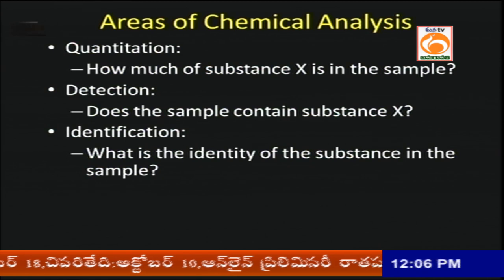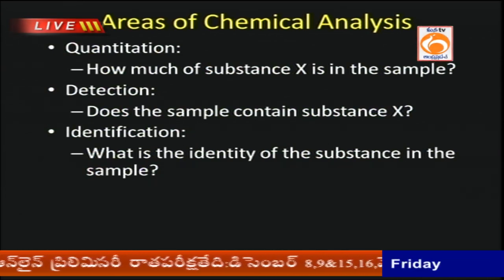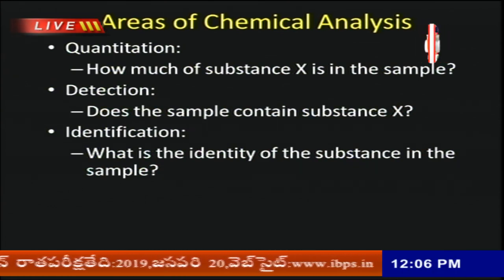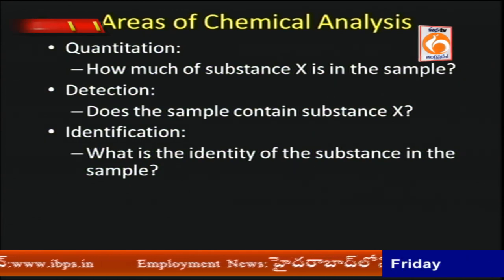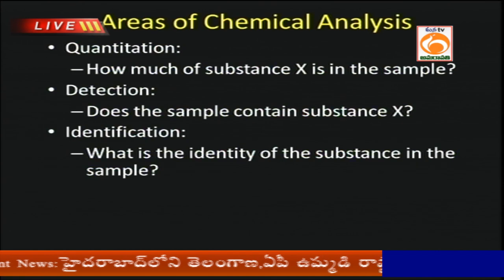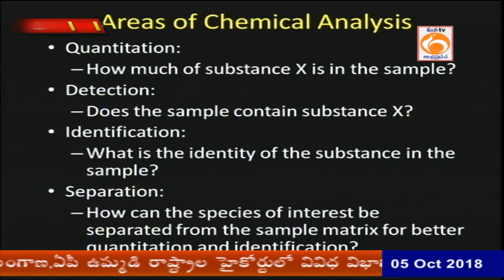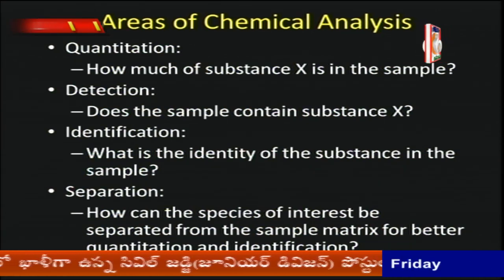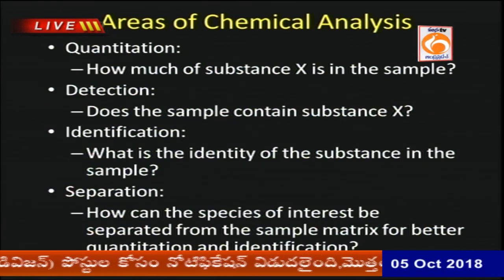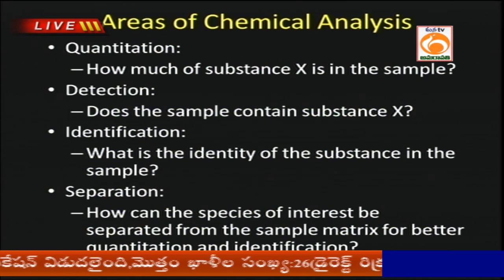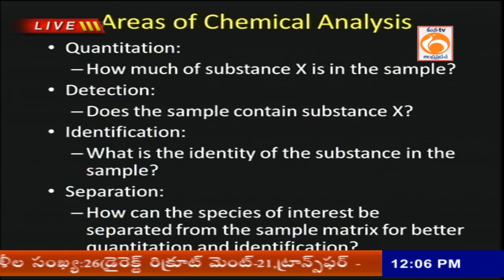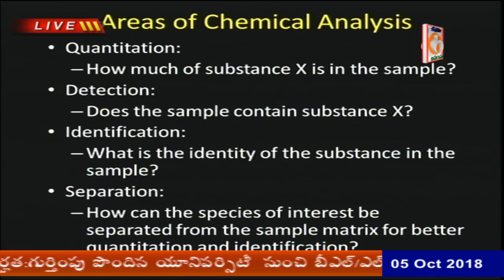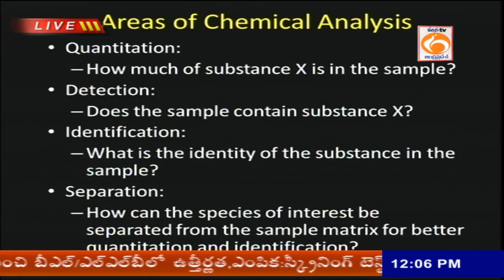The second is detection — what is the exact substance present in the sample. The third is identification — what is the identity of the substance in that particular sample. The fourth is separation — the isolation or removal of impurities to get a pure substance. Quantitation involves techniques like volumetric analysis, gravimetric analysis, and so on.